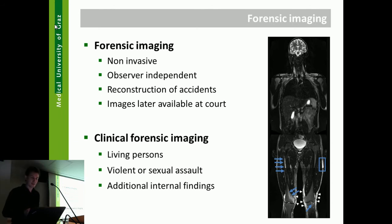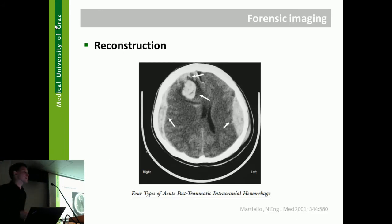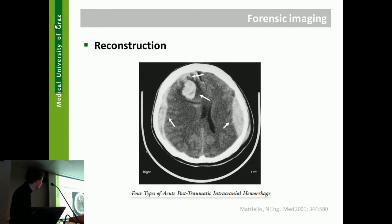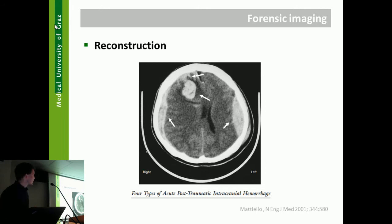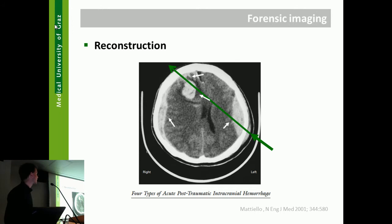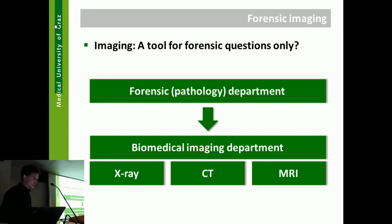Clinical forensic imaging deals with living persons who have suffered from violent or sexual assault and provides internal findings. In postmortem imaging, this image from the New England Journal of Medicine shows four types of hemorrhages. From a medical point of view, you see the hemorrhages, where they are, and how to best treat a patient. The forensic view focuses on additional hemorrhages outside the brain and the direction of impact — giving us insight into how the accident happened.